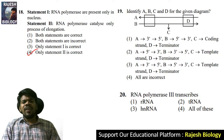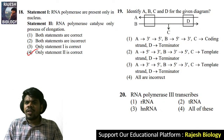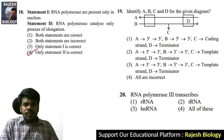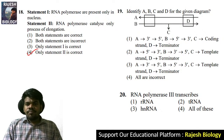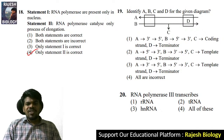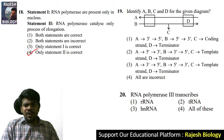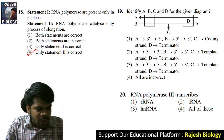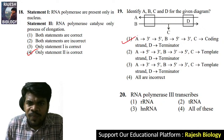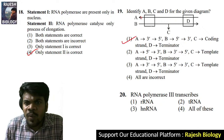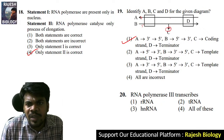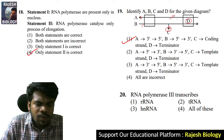Question 19: identify A, B, C, and D for the given diagram. Which is the coding strand, which is the non-coding strand, which is the terminator, and which is the template strand? A is the 3' to 5' strand, B is the 5' to 3' strand — it is the coding strand. C becomes the template strand and D is the terminator.